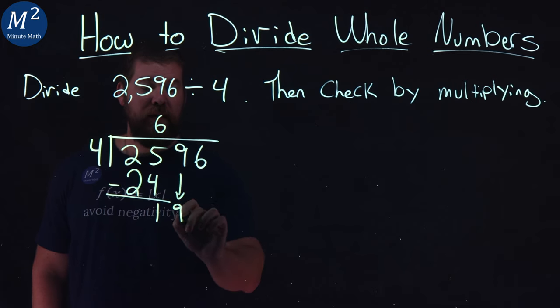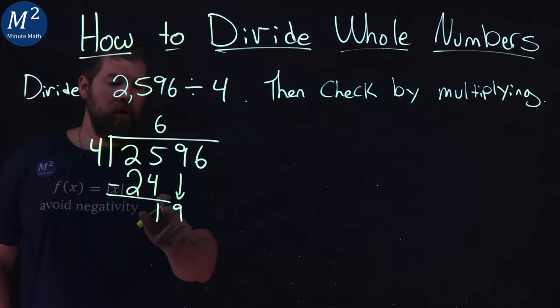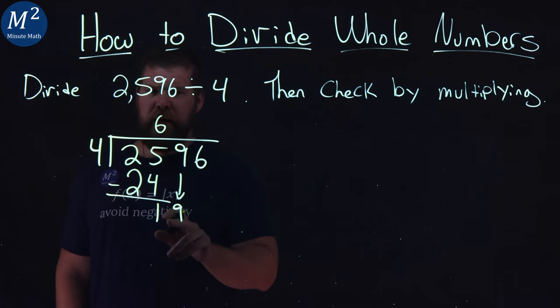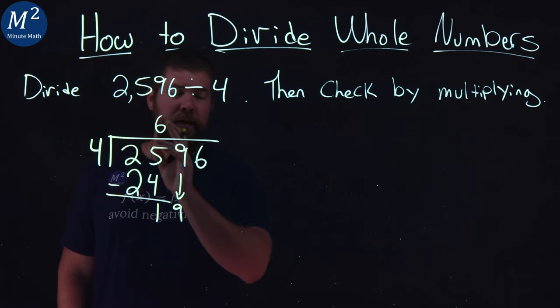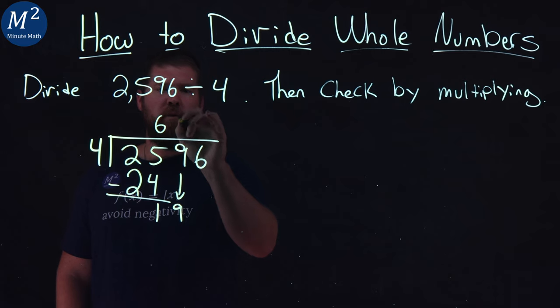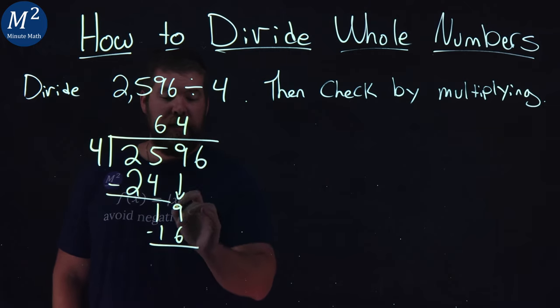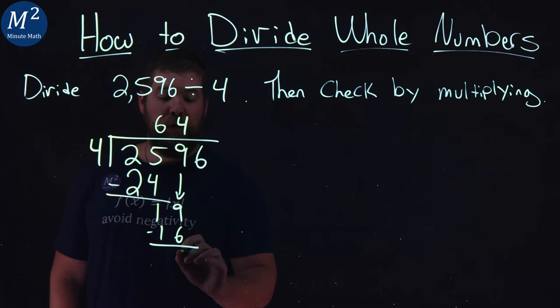We bring down the 9. Does 4 go into 19? 4 goes into 19 four times, giving me 16. 4 times 4 is 16. Can I add another 4? That gives me 20, too high. So I have to go with 4. 4 times 4 is 16. Subtract the two numbers: 19 minus 16 is 3.